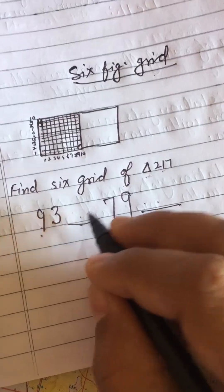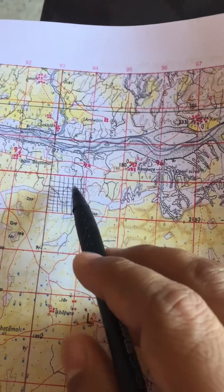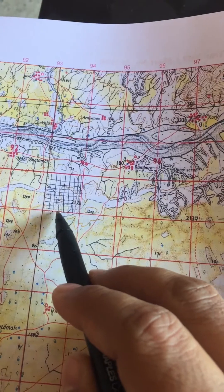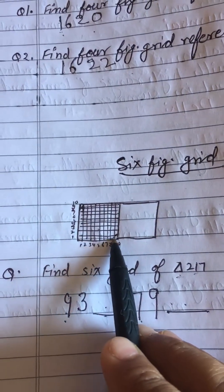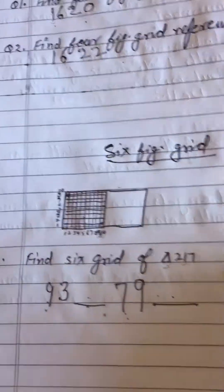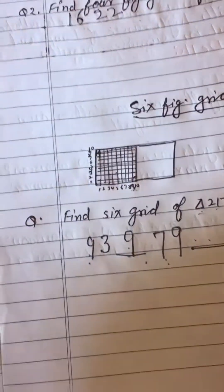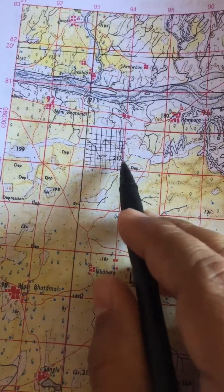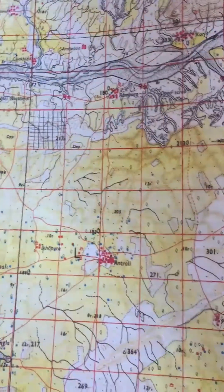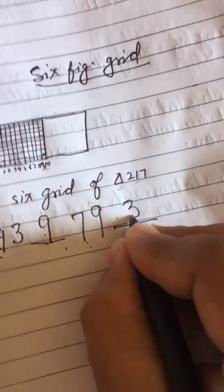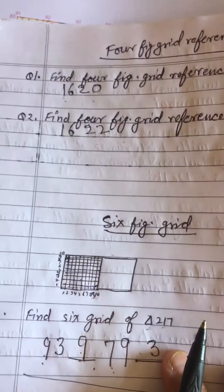Now we fill in the six-figure detail. For the easting subdivision, we count the vertical lines: 1, 2, 3, 4, 5, 6, 7, 8, 9 — the point falls on line 9, so we write 9 after the easting. For the northing subdivision, counting the horizontal lines gives us 1, 2, 3 — it is on the third line, so we write 3. Our complete six-figure grid reference is 939-793.